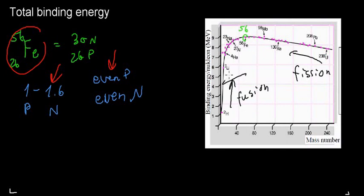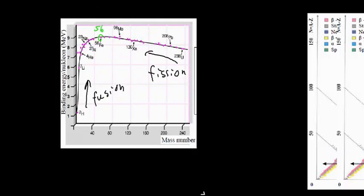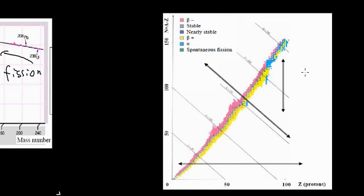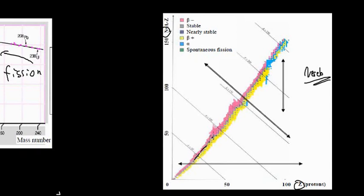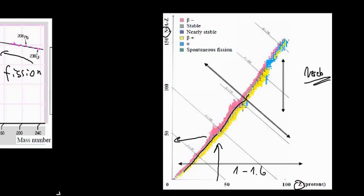Now let's look at another important graph. On the x-axis I have the number of protons Z, and on the y-axis I have the number of neutrons, which is mass number minus atomic number. In the middle of the plot there is a shaded gray band representing all the stable isotopes. If you solve for the ratio along that line, you get approximately 1 to 1.6 — so all these isotopes are pretty much stable and fulfill this condition.